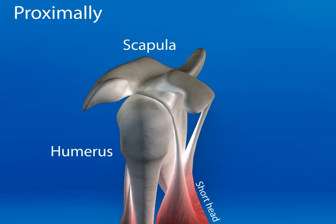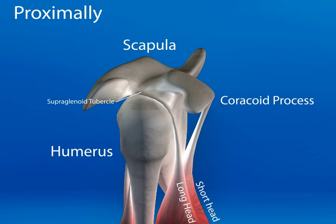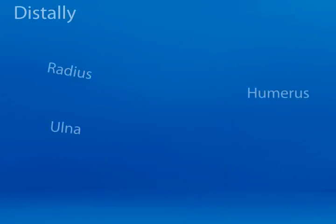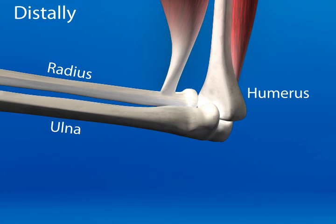Proximally, the short head of the biceps attaches to or originates from the coracoid process of the scapula. The tendon of the long head passes along the intertubercular groove of the humerus into the joint capsule at the head of the humerus and attaches to the scapula at the supraglenoid tubercle. Distally, the biceps attaches to the radial tuberosity. Because the ulnar and radial bones can rotate about each other, the biceps can powerfully supinate the forearm.